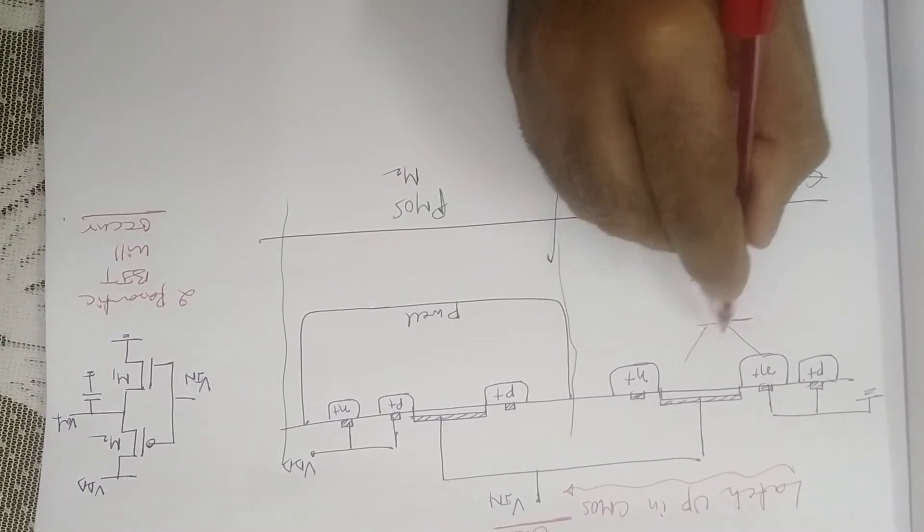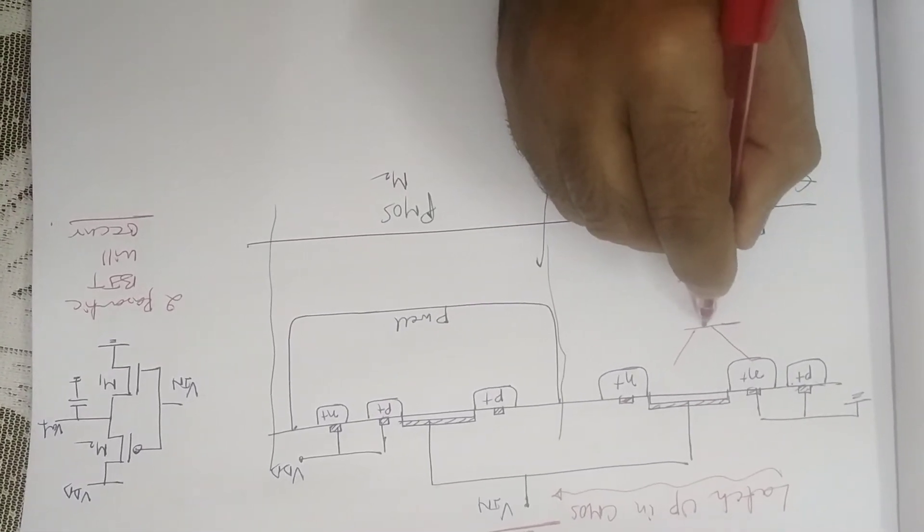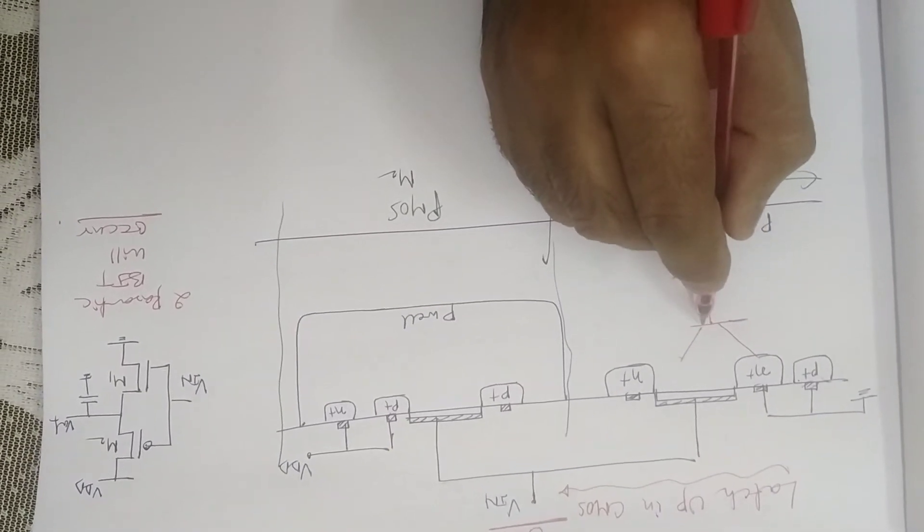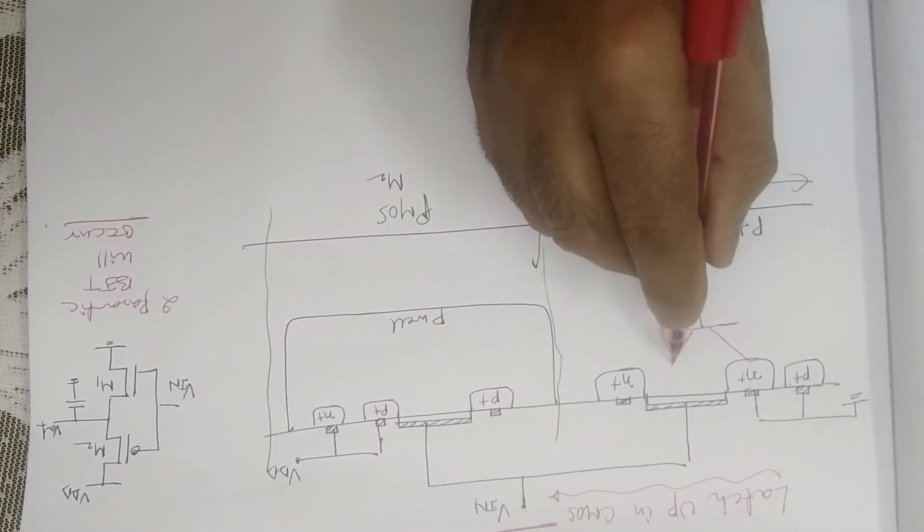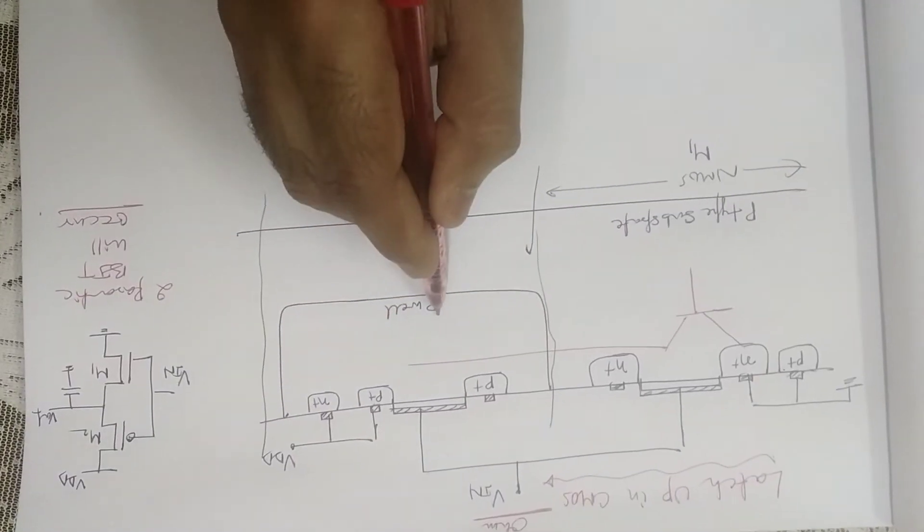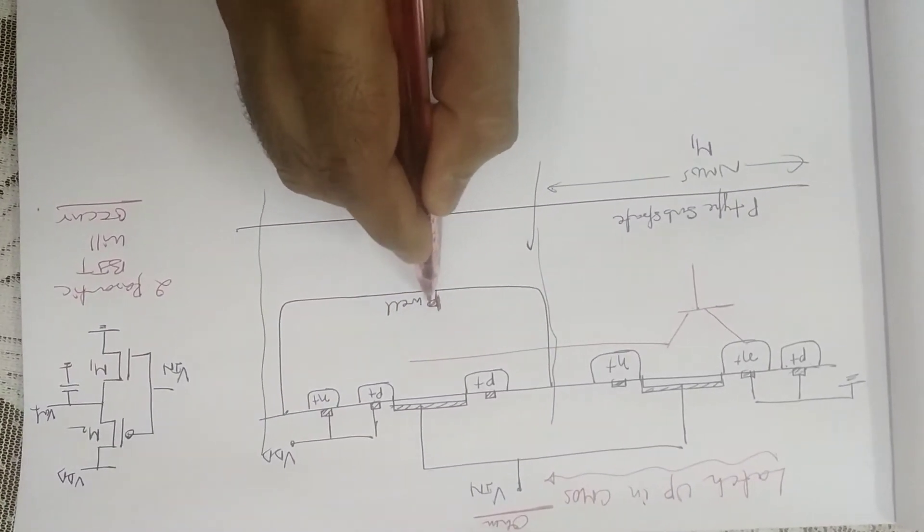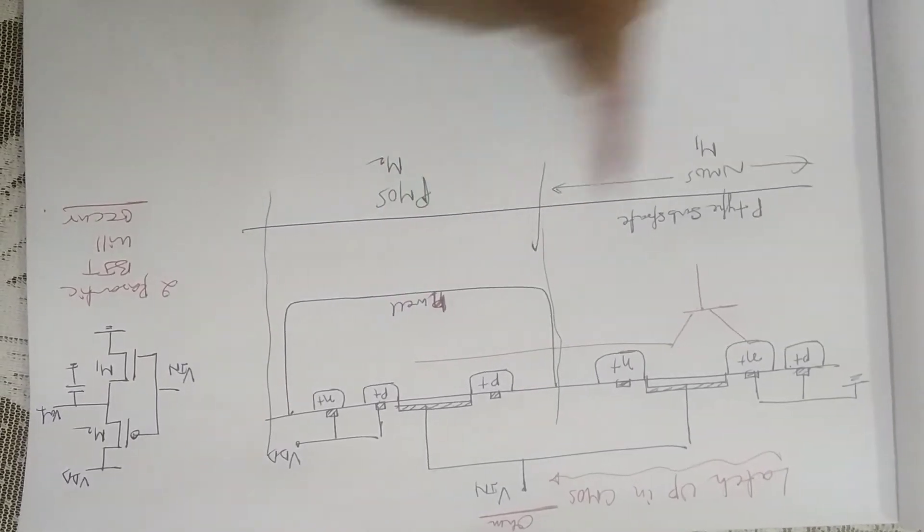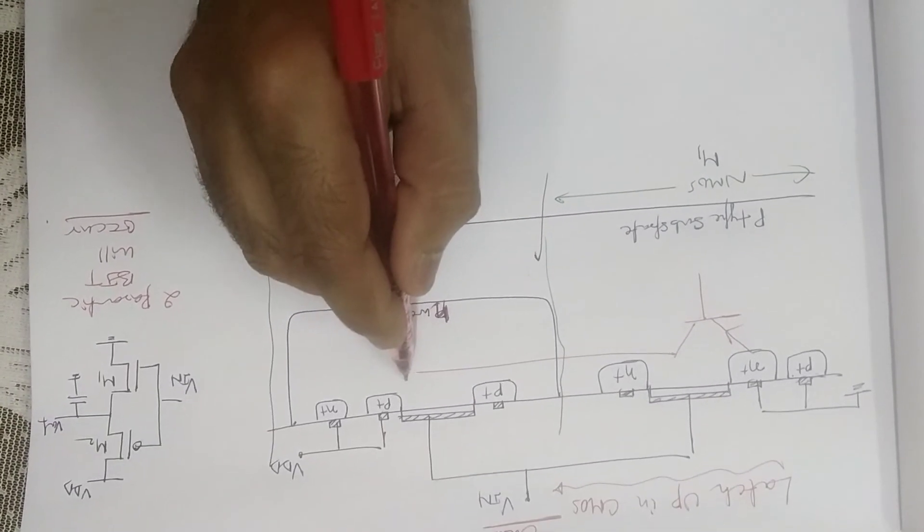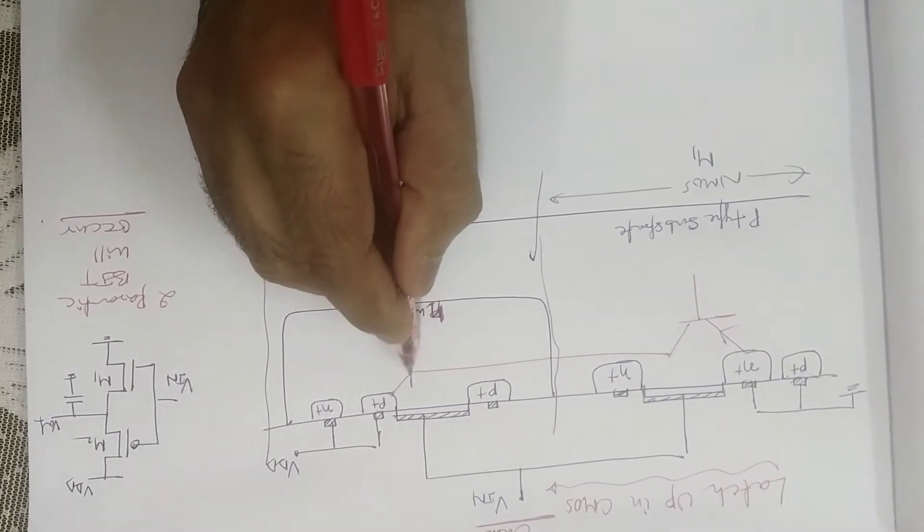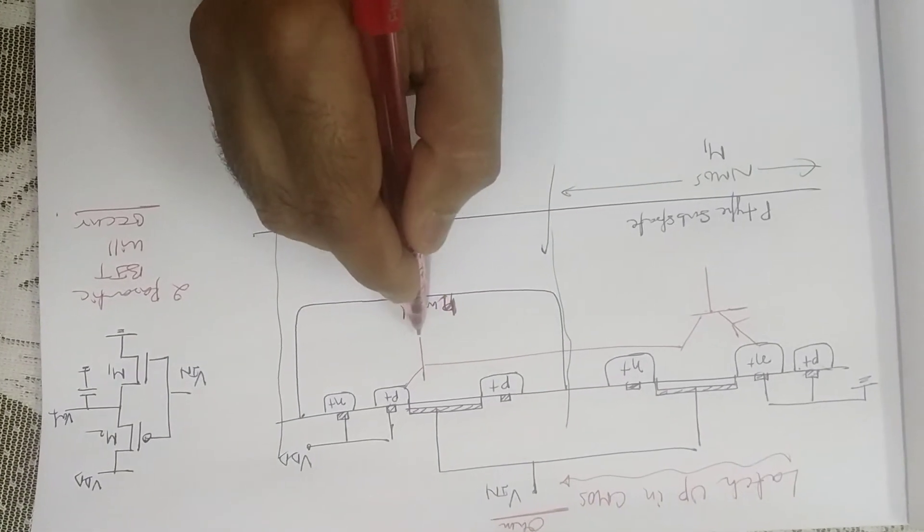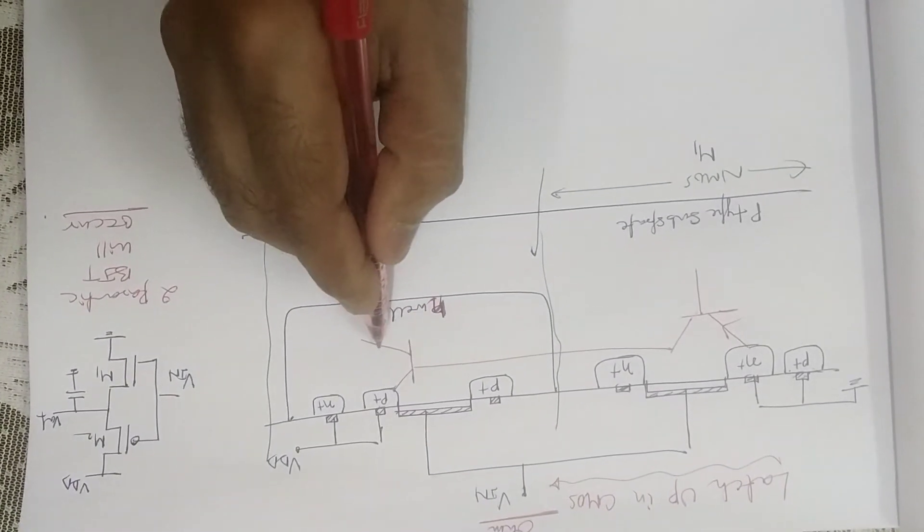This one is your N, this one is your P-type substrate. N-P-N. Oh sorry, this should be N-well, that's my mistake. Okay, then after this one is a P-N-N and another P.